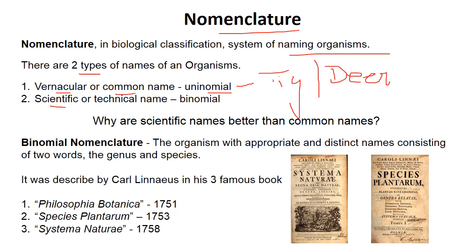The common name has regional variation, which causes confusion. The scientific name is unique throughout the world. Scientifically, we give an organism a binomial name — binomial nomenclature. It has two parts: genus and species. Together, genus and species form the scientific name of the organism. Scientific names are better than common names because common names have regional identity, causing confusion among all the names for a particular organism. That's why we need a unique scientific name throughout the world.